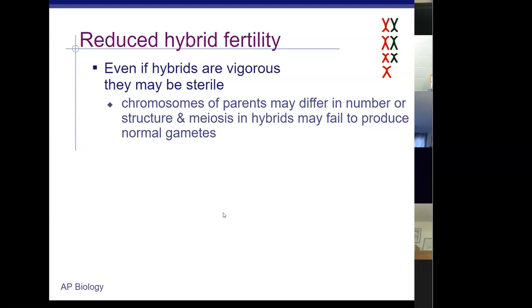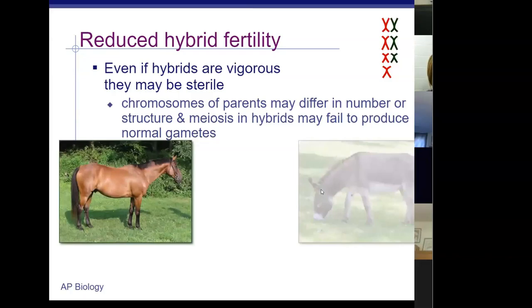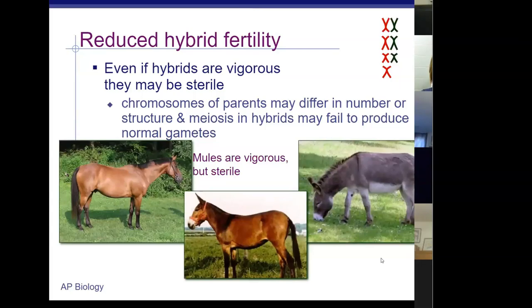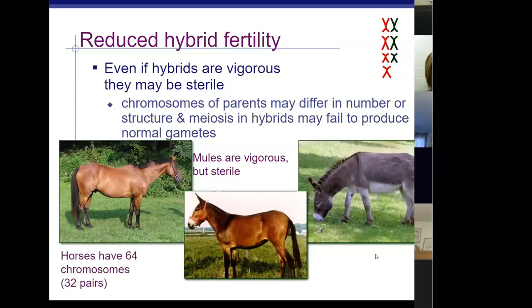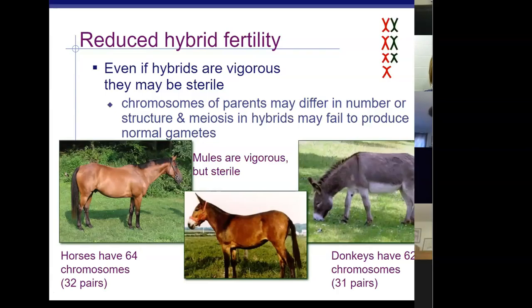Hybrid sterility occurs when the chromosomes of parent species differ in number or structure, causing meiosis in hybrids to fail to produce normal gametes. If one species has 26 chromosomes and another has 27, there will be a mismatch — without a pair for every chromosome, you lack the information to create a strong, viable offspring. The mule is a classic example: the horse (64 chromosomes) and donkey (62 chromosomes) produce a strong mule, but the mule is sterile because of the unpaired chromosome. Mules cannot make more mules.